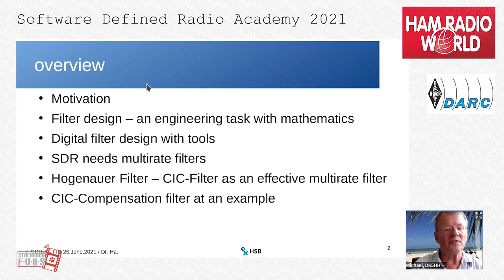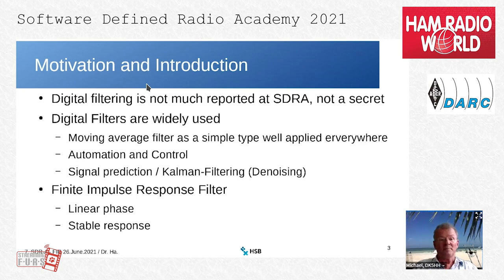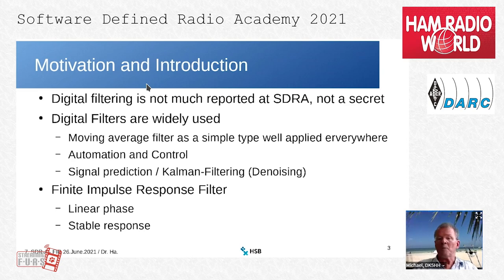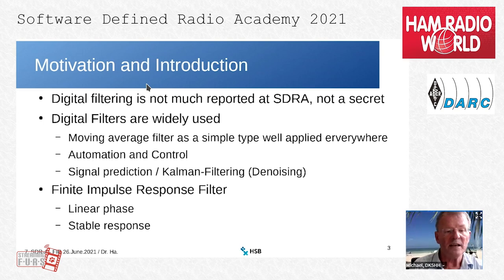The last part will be the CIC compensation filters shown through an example. Digital filtering is not much reported at the SDRA, but it is not a secret — digital filters are widely used. Many of you know the moving average filters as a simple type, applied everywhere. Automation and control use digital filters and signal prediction. Kalman filtering is a special application which helps in the radio community for denoising. My focus will be on finite impulse response filters, which have a linear phase and a stable response — important for receivers.